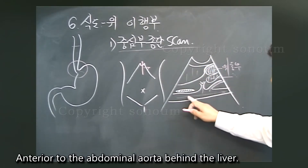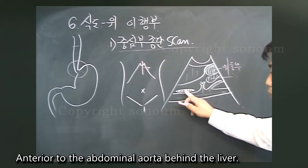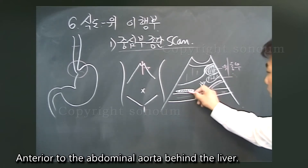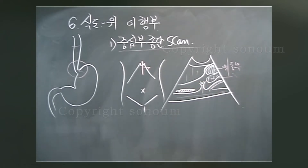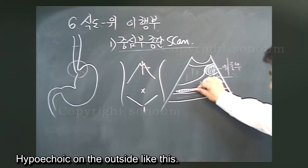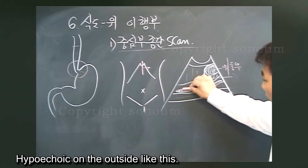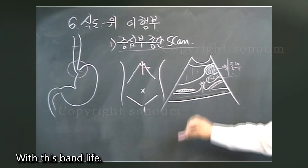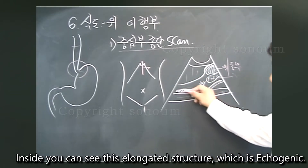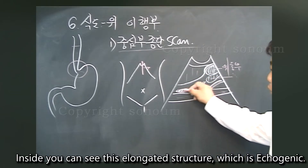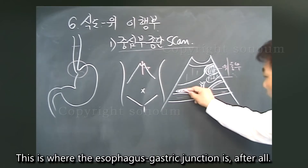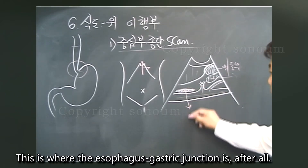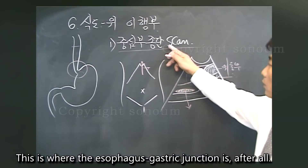Anterior to the abdominal aorta, behind the liver, there is a hypoechoic band on the outside. Inside you can see this elongated structure, which is echogenic. This is where the esophagus-gastric junction is.